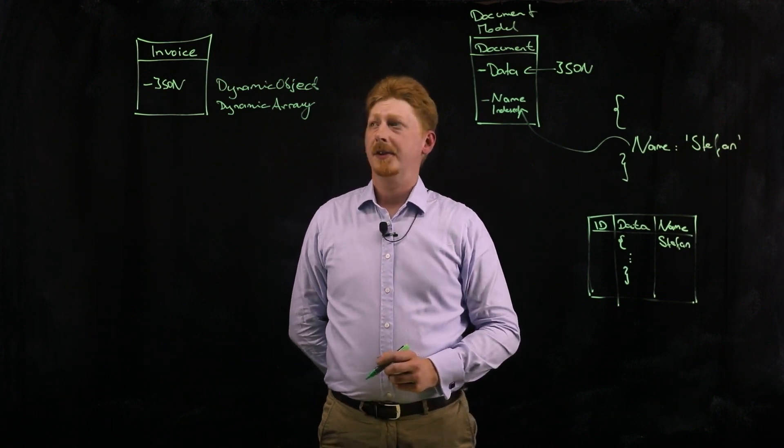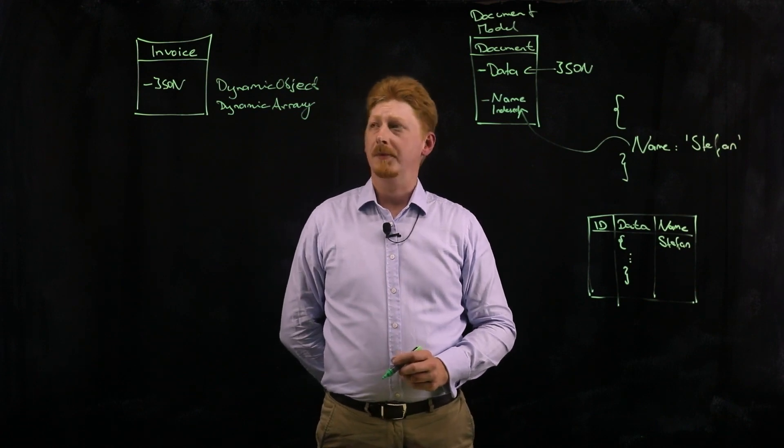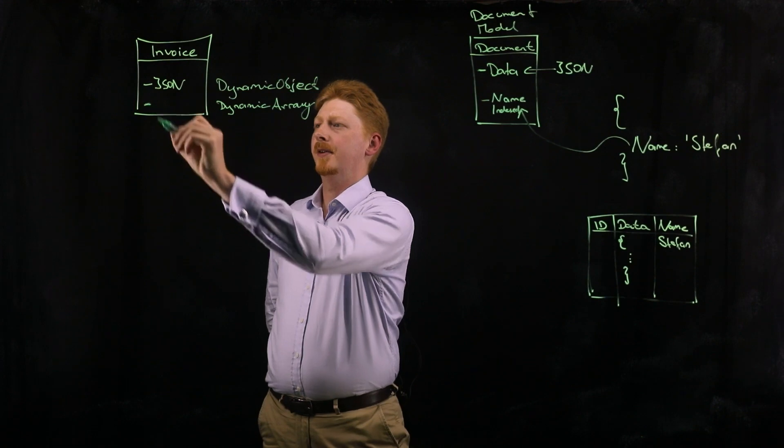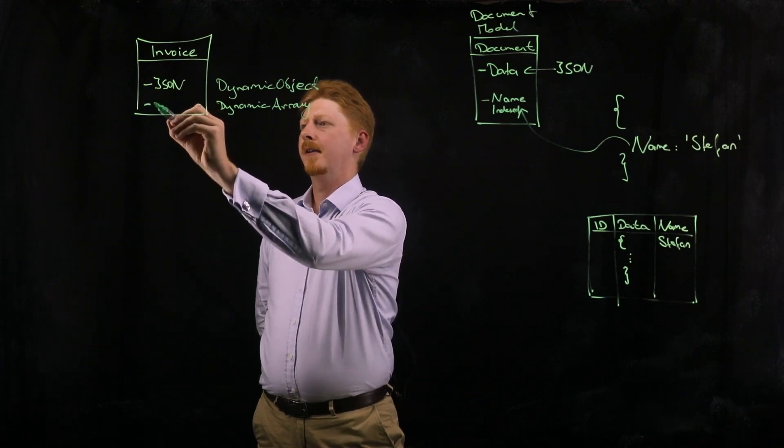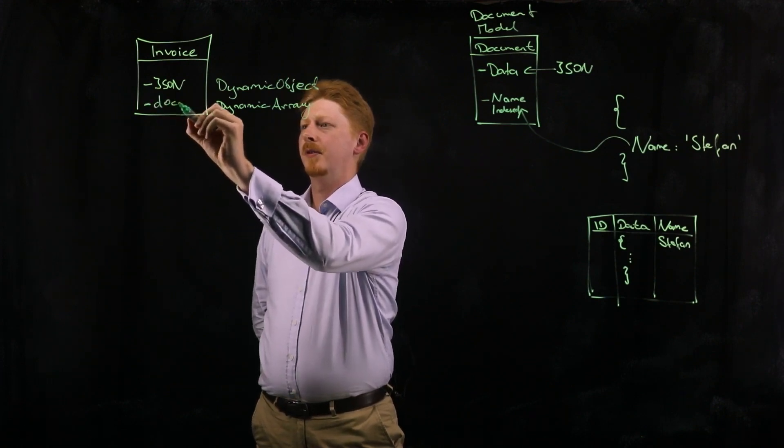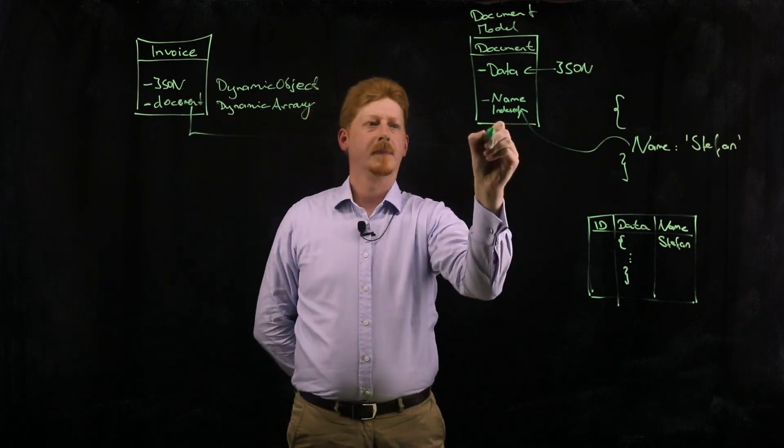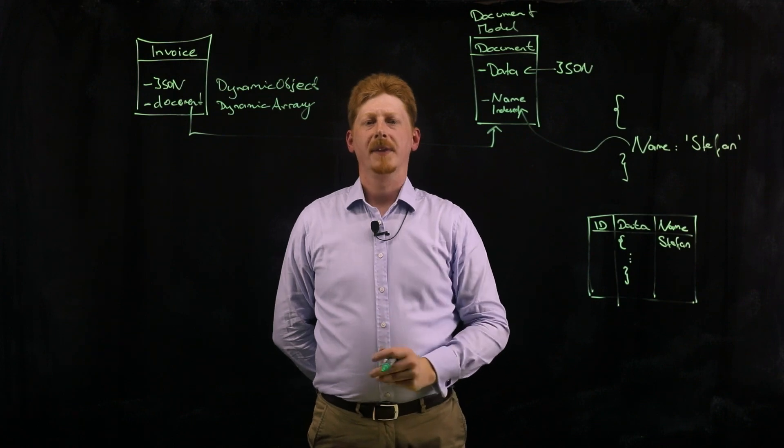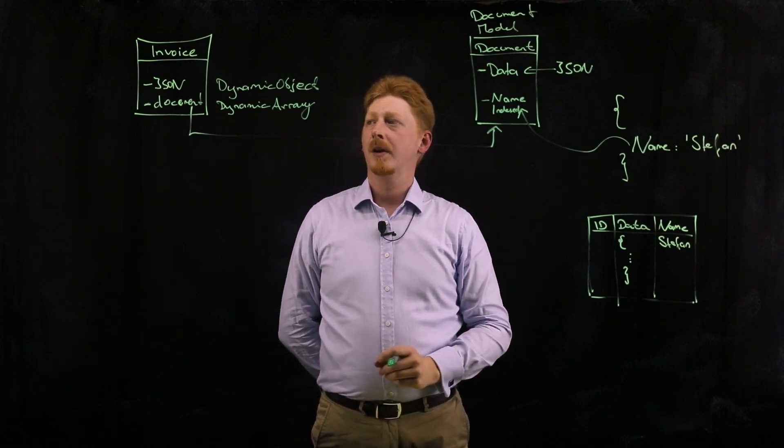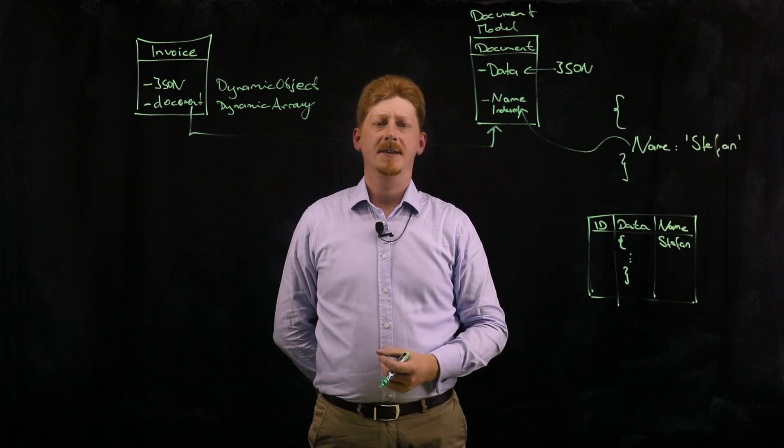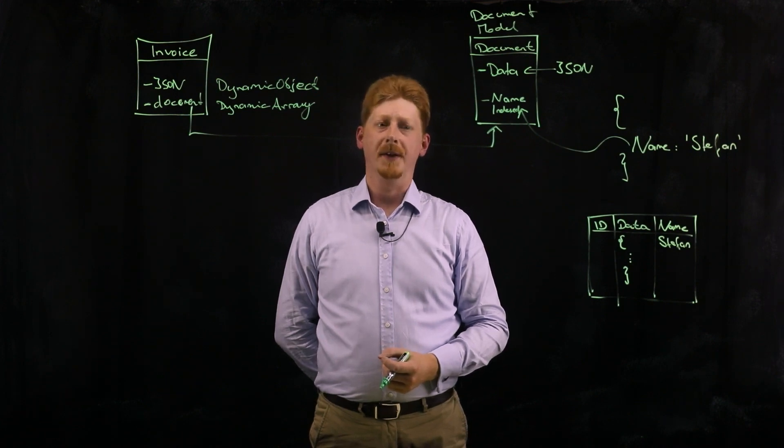One nice intersection with a regular object model is that I can add properties in a regular persistent class and link this to a document like this one. This allows me to seamlessly move between the different models and access the data in very efficient ways.